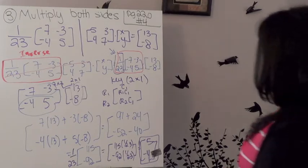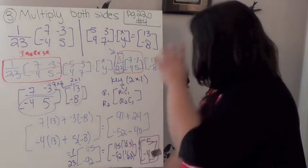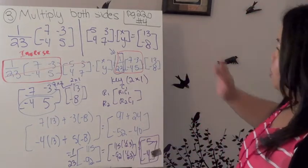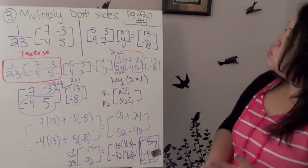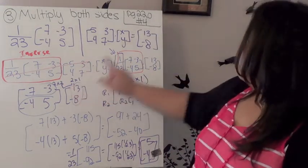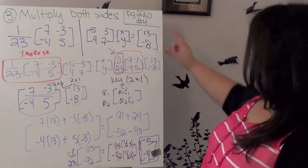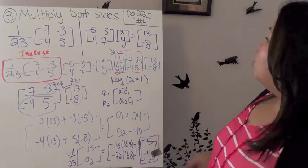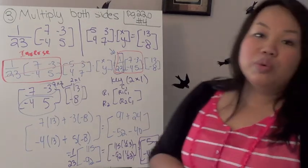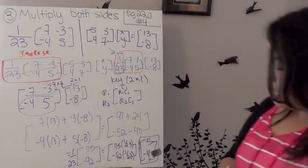Alright, so it's a lot of process, but the steps are pretty simple. The first one, you put it into a matrix equation. The next one is to find the inverse, and then use that inverse to multiply it by this, and you should be able to get your x and y, 5, negative 4. So go ahead and try page 220, number 4, and I will see you in class.